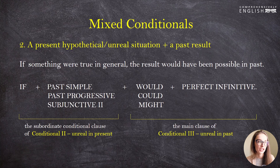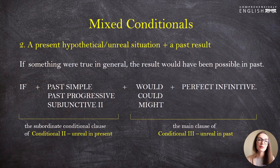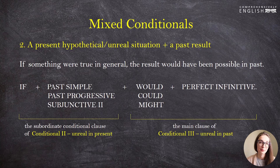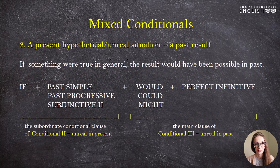Now the second type of mixed conditionals: if something were true in general, the result would have been possible in the past. Here we speak about a hypothetical situation in the present and a result in the past. The formula is: if plus the past simple or past progressive or subjunctive 'were' for the verb 'to be,' plus 'would,' 'could,' or 'might' plus the perfect infinitive. The conditional clause is of the second type — unreal in the present — and the main clause is of the third type.